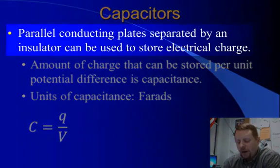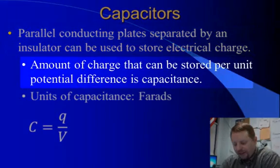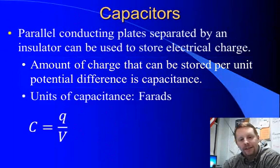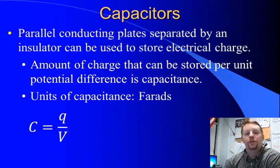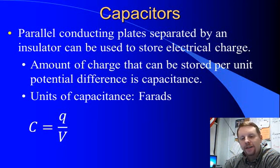So capacitors are parallel conducting plates that are separated by an insulator. And when you set up this configuration, you can store electrical charge. The amount of charge that can be stored per unit potential difference is known as the capacitor's capacitance. The more capacitance you have, the more electrical charge you can store for the same amount of potential difference. The units of capacitance are farads.